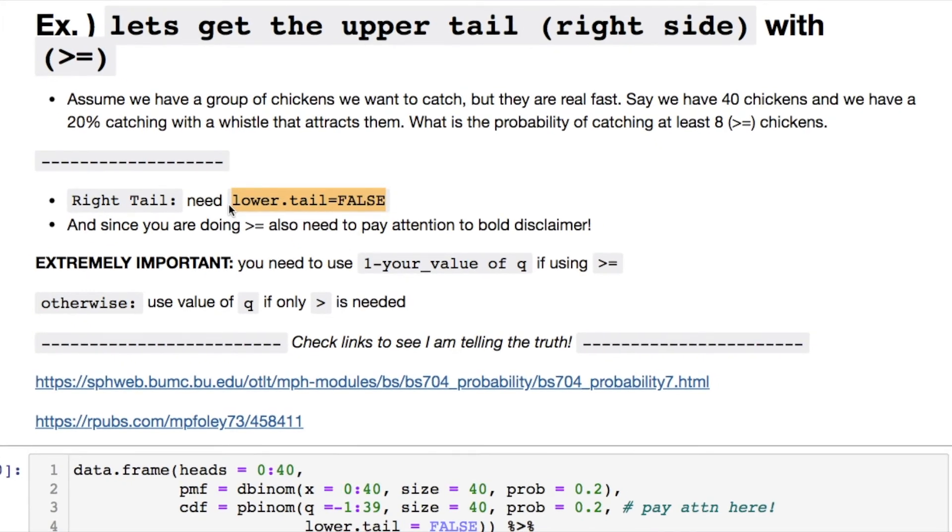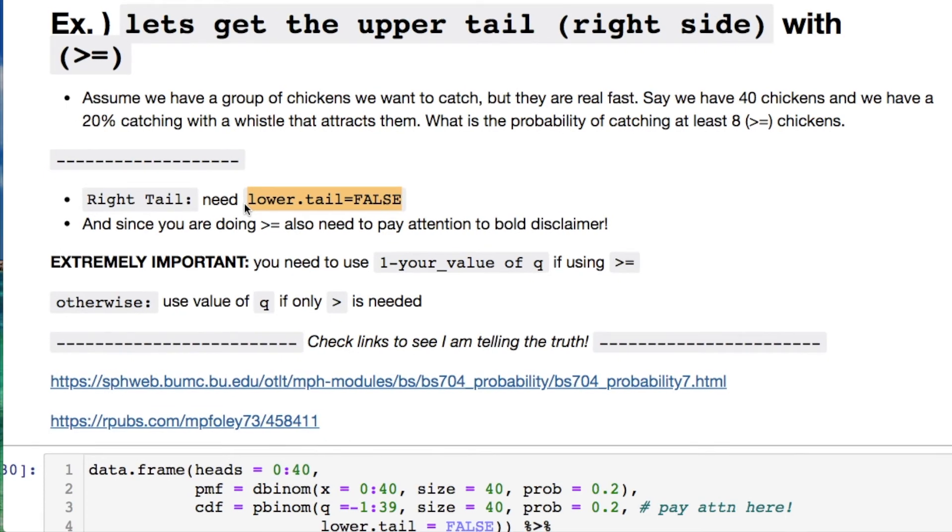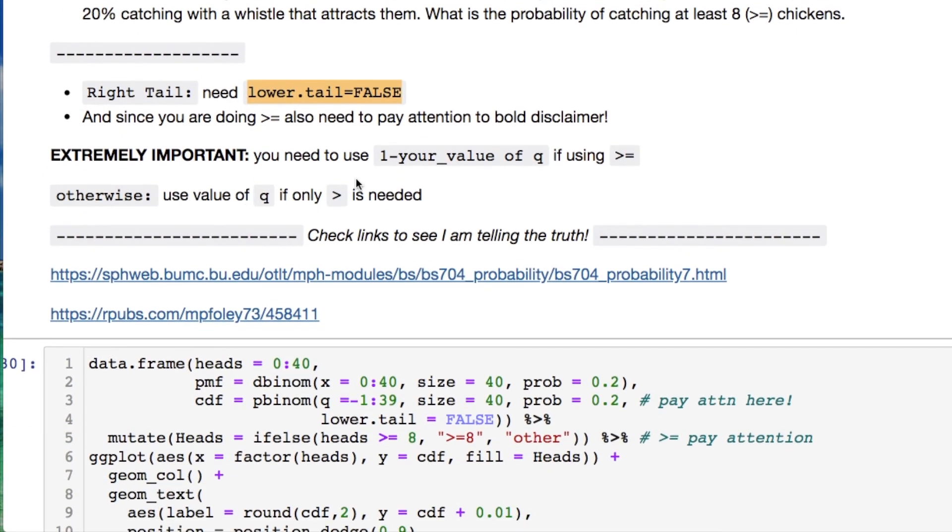We got to remember something that's really important here. You're going to need to do one minus your q value if you're doing greater than or equal. Otherwise if you're doing strictly greater than you could just use q.